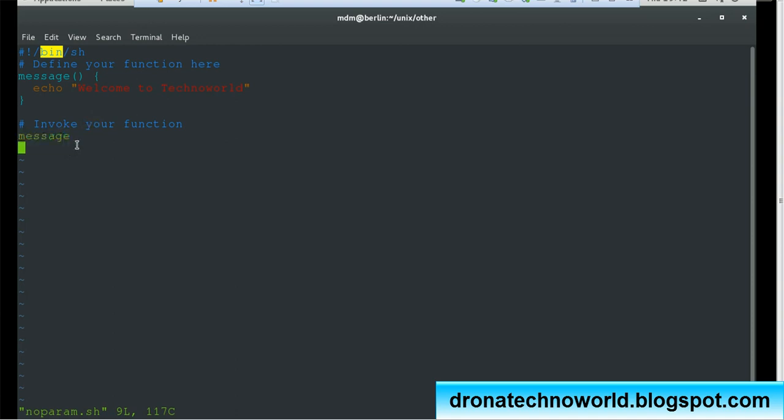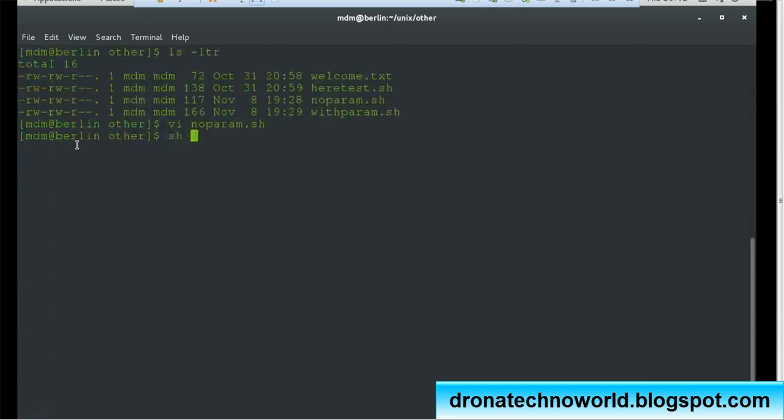Let me execute this. It's very simple. Just call 'no_param.sh', and we can see clearly 'Welcome to Techno World'. It is called from that function.